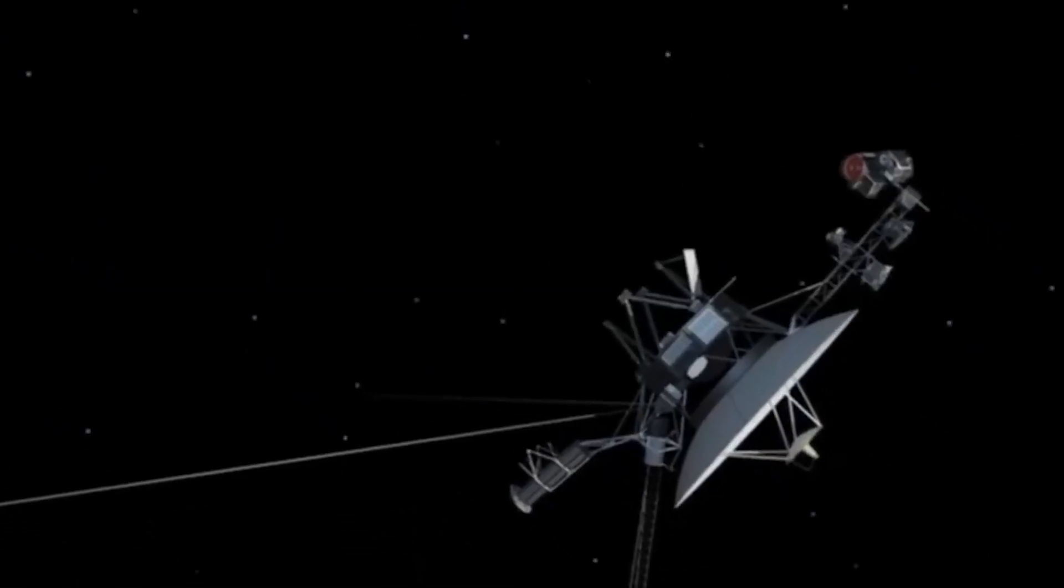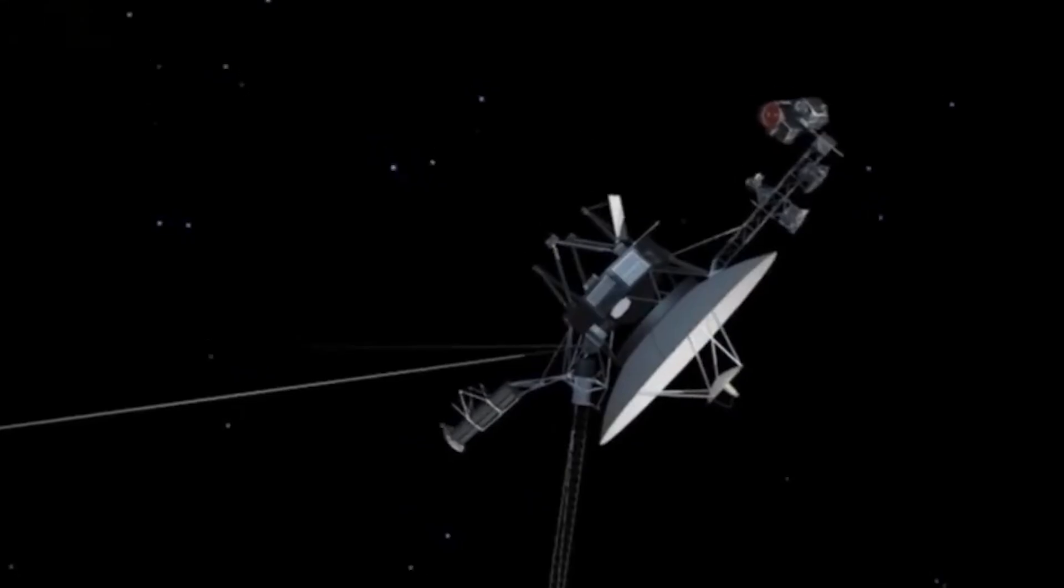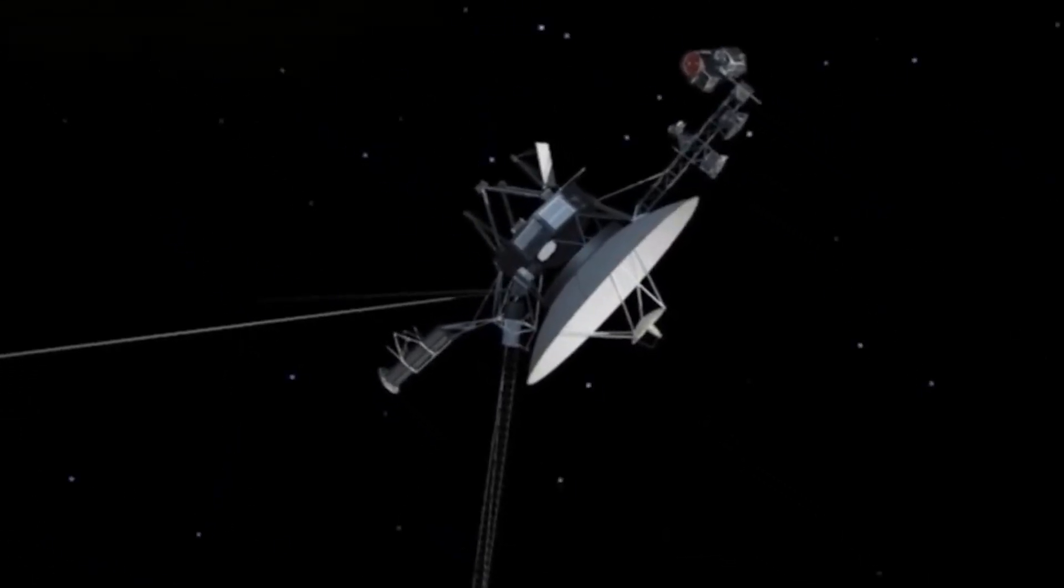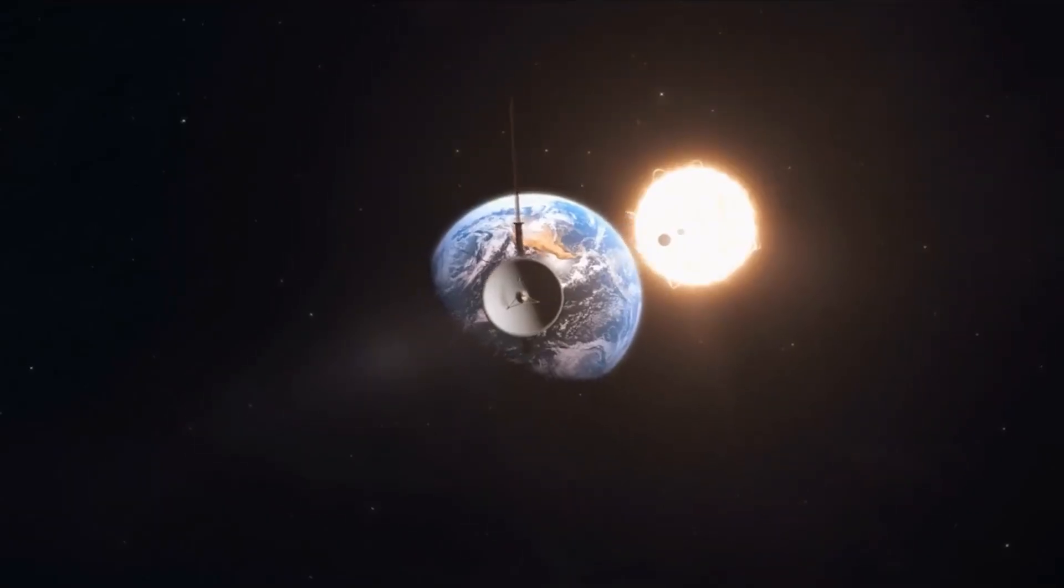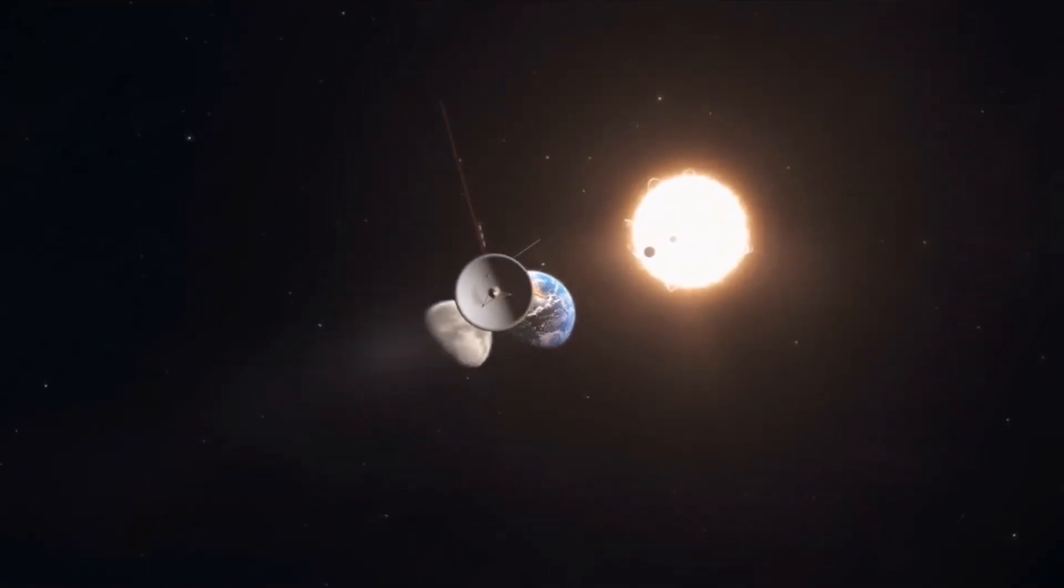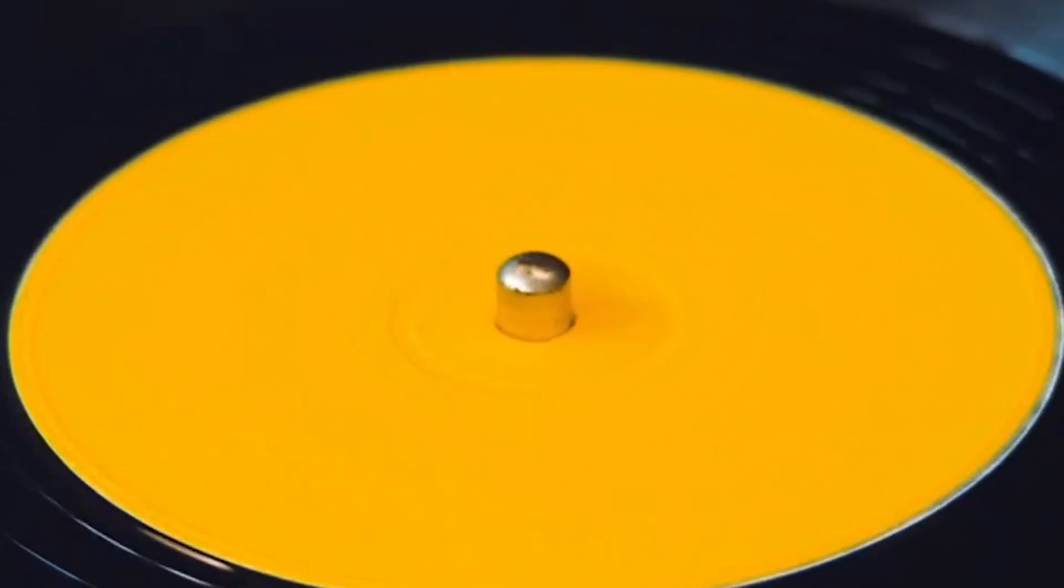This is the story of Voyager 1, a spacecraft launched in 1977 that has traveled farther than anything humanity has ever built. For nearly five decades, it has ventured beyond the sun's reach, carrying with it not just scientific instruments, but humanity's message in a bottle, the golden record.